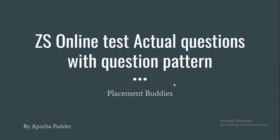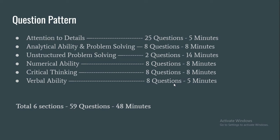Hello everyone, welcome to Placement Buddies. In this video we will discuss the ZS online test actual questions with the actual question pattern. There will be six sections: attention to details (25 questions, 5 minutes), analytical ability and problem-solving (8 questions, 8 minutes), unstructured problem-solving (2 questions, 14 minutes), numerical ability (8 questions, 8 minutes), critical thinking (8 questions, 8 minutes), and verbal ability (8 questions, 5 minutes). Total: 59 questions in 48 minutes.